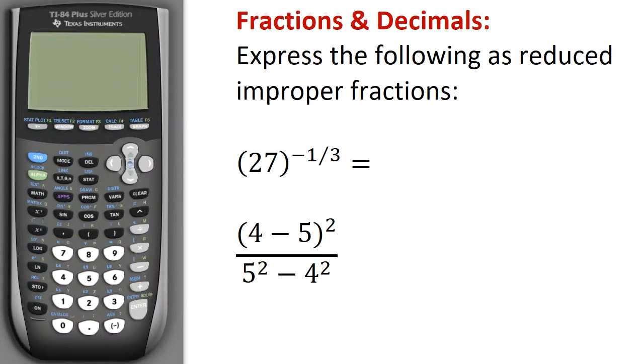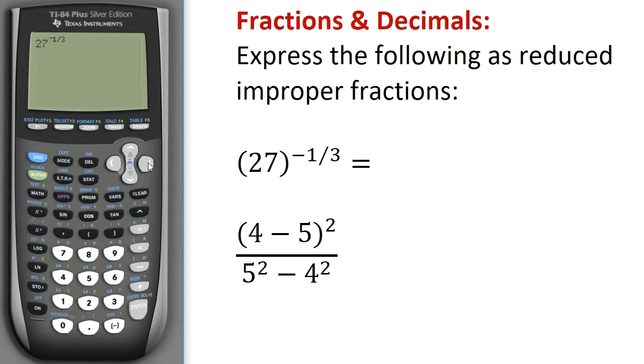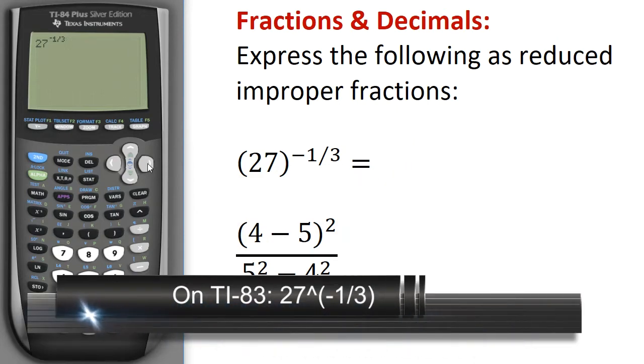Next, I want to have the calculator perform the calculation for the base of 27 to the power of negative 1/3. 27, I'm going to hit this caret symbol here, and that puts the cursor up into the exponent area, minus 1 divided by 3. Notice that the cursor is now blinking up in the exponent area. I want it down in the whole numbers area, so I'm going to hit the forward key here.